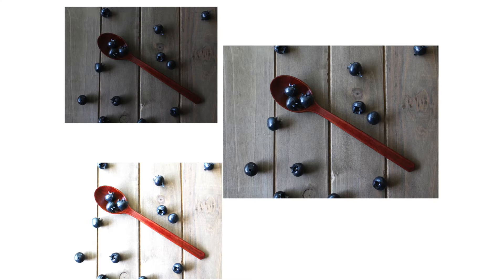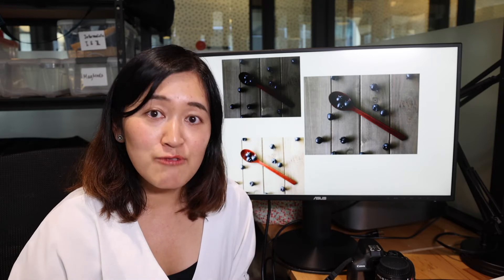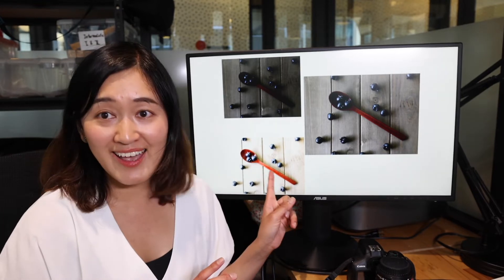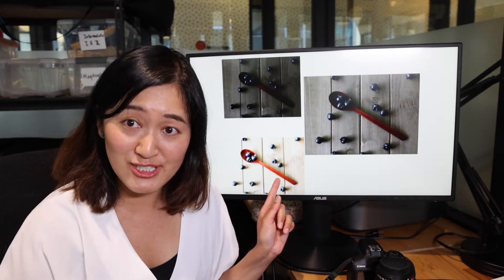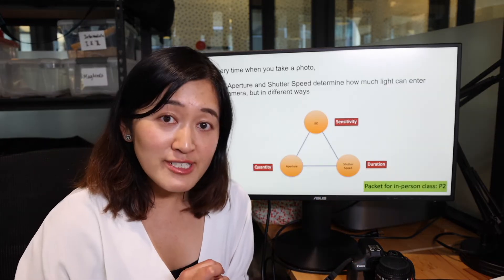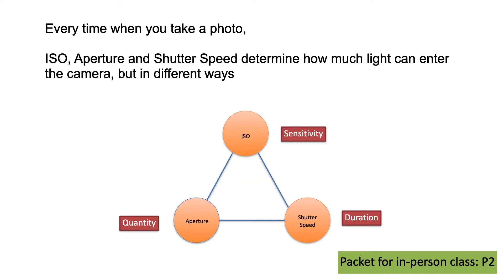For these three pictures, can you tell me which photo is too bright — too bright means overexposed, allowing a lot of light into the camera — which picture is underexposed, meaning there wasn't enough light, and which looks correctly exposed? This one is overexposed, that means too much light. This one is underexposed, not enough light. And this one looks just right. ISO, aperture, and shutter speed determine how much light can come into the camera, but in different ways.